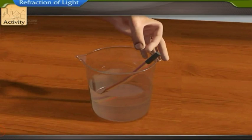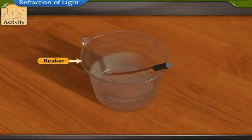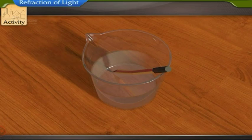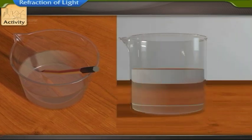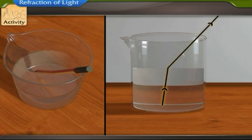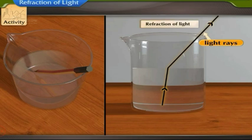Place the pencil obliquely in the beaker. What do you observe? You will observe that the pencil appears broken at the surface of water where the light rays emerge from water and enter the air. This happens because the light rays traveling from one medium to another change their direction of propagation. This phenomenon of light is called refraction of light.